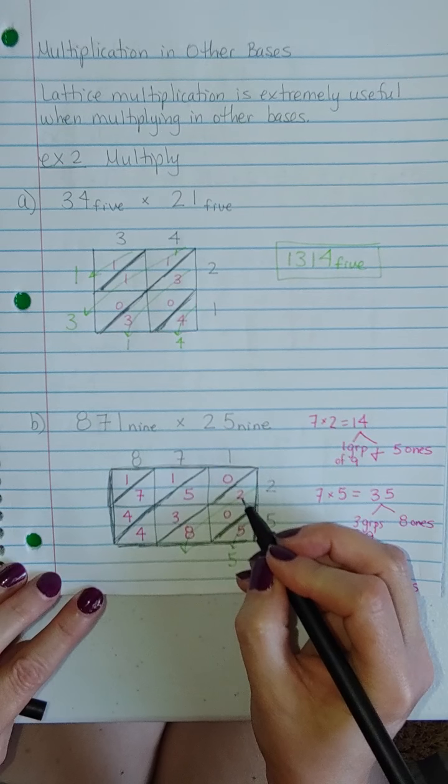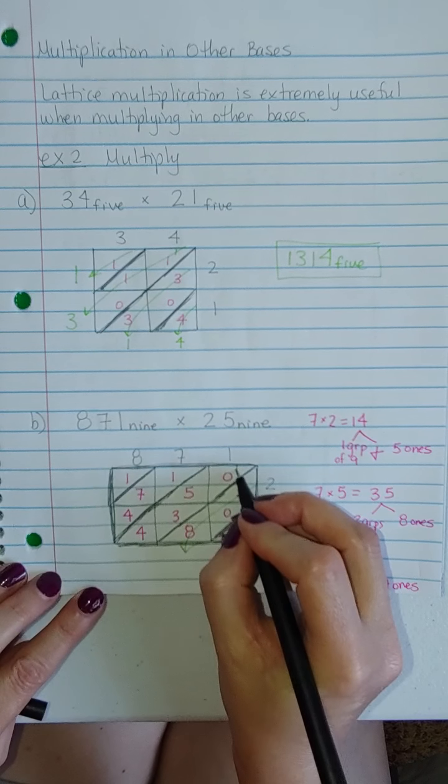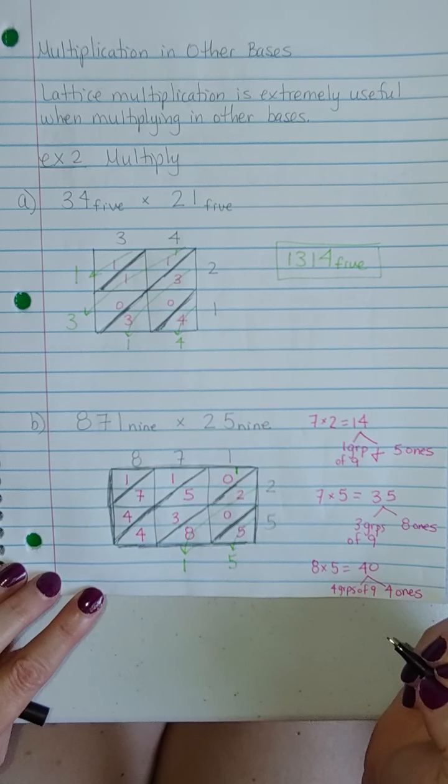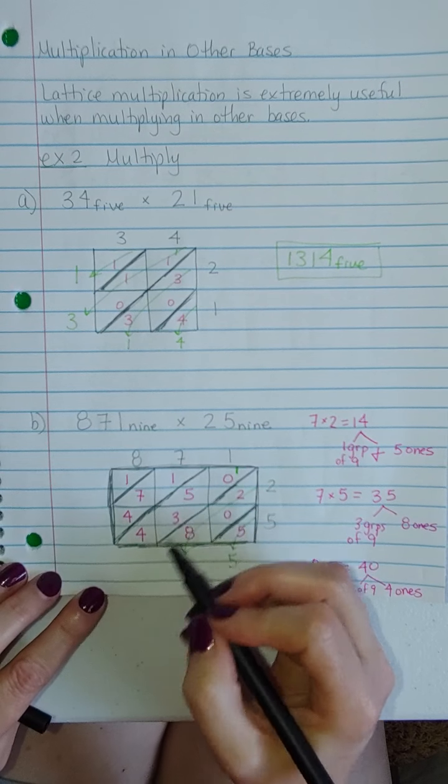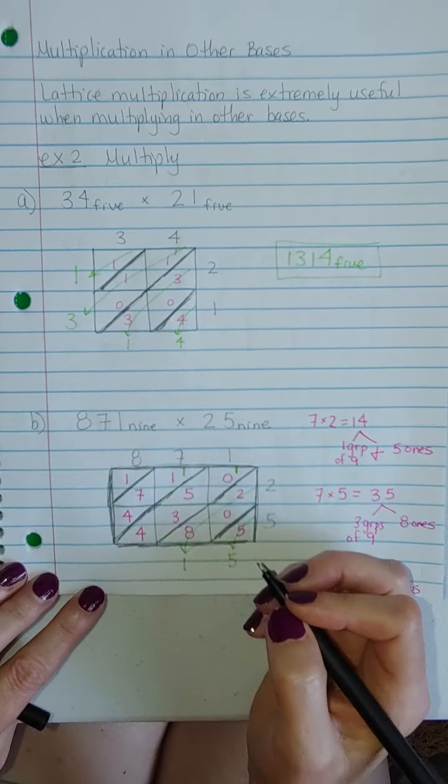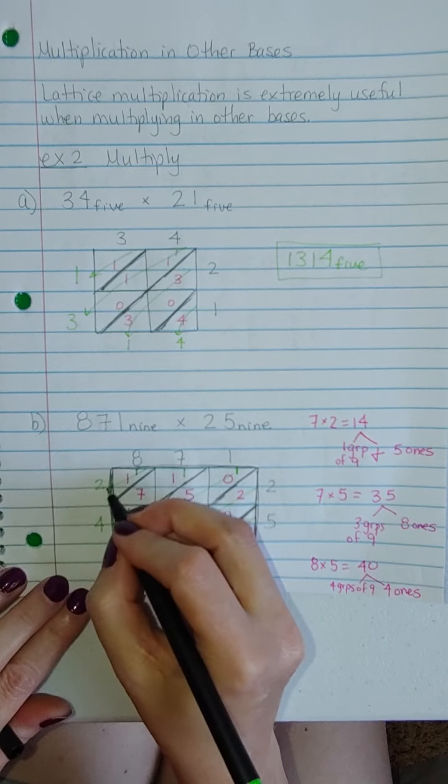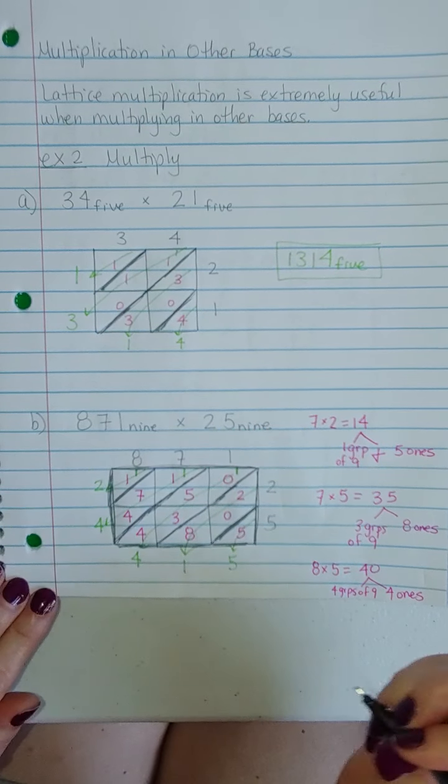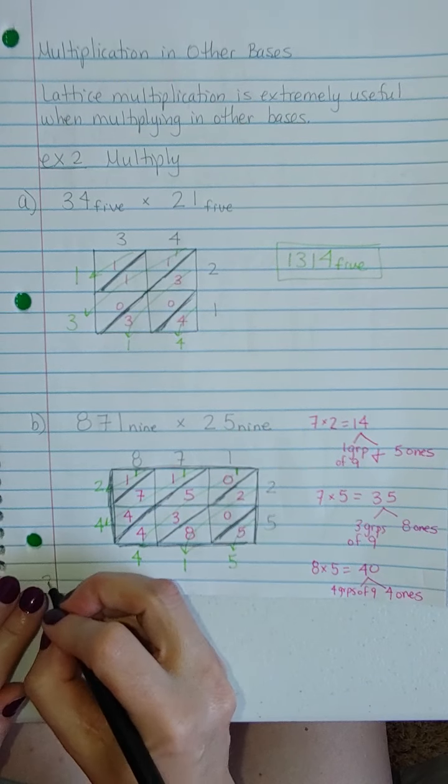So that's 4. 8, 9, 10. That's 1 group of 9 with 1 left over. Let's see. 5, 6, 7, 8, 9, 10, 11, 12, 13 is 9 and 4 left over. And then that's 1 plus 1, which is 2. So my final answer here is 2, 4, 4, 1, 5, base 9.